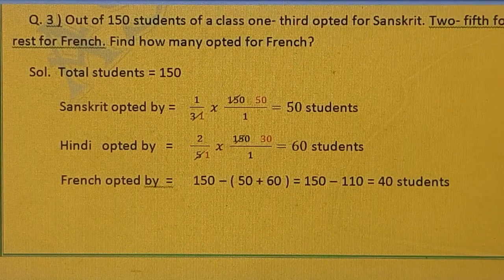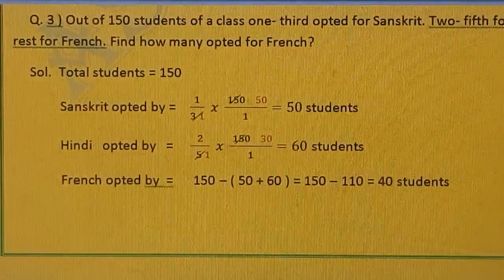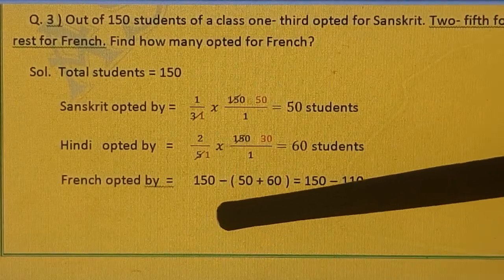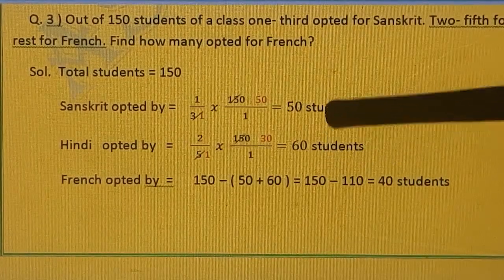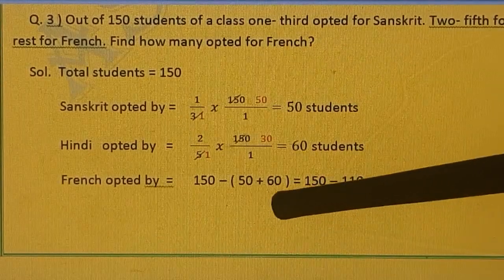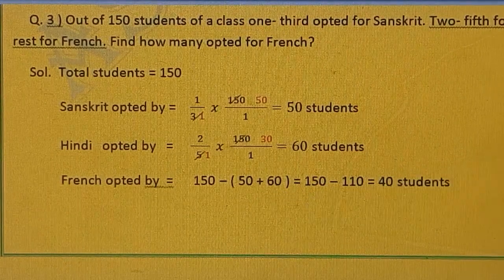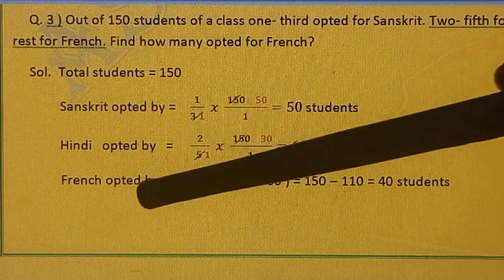Rest opted French. So if we are taking out total of this Sanskrit and Hindi, then rest we can find out. So French opted by 150 minus 50 plus 60 will give the answer 110. So we have done addition first 110 and then subtracted from 150. So there are 40 students who opted French.